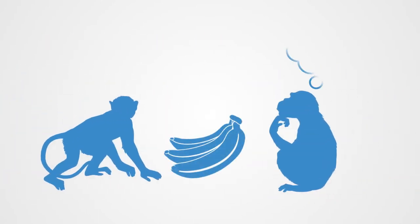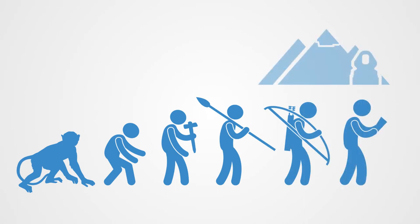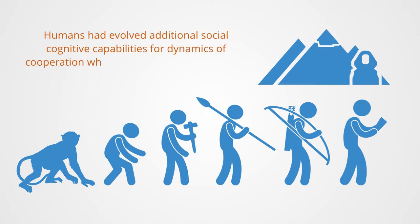The researchers noted that apes did have social cognitive skills, but they were mainly using their social understanding of others within the context of competition. From this, the researchers proposed that on top of great apes' skills for social cognition, humans had evolved additional social cognitive capabilities for dynamics of cooperation, which involve greater complexity but can ultimately be seen as the foundations to advanced forms of civilization.